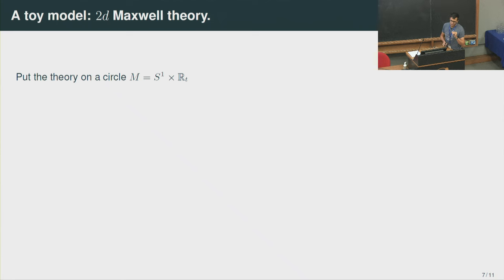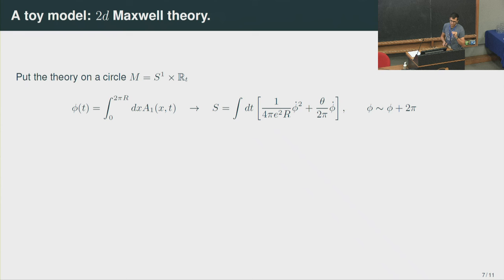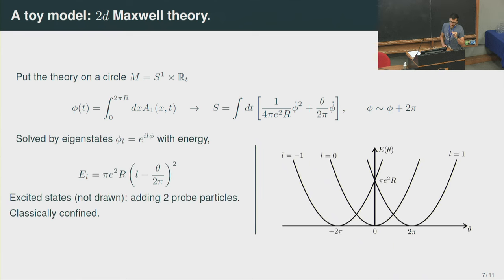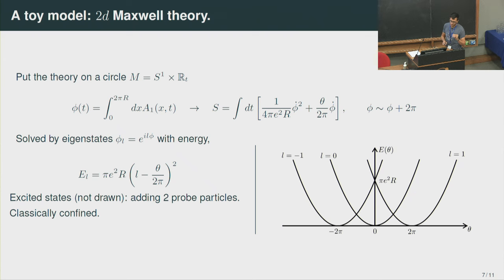Let me discuss the physics of 2D Maxwell theory. We can regulate it by putting it on a circle, where the theory reduces to the quantum mechanics of a particle in a circle with a magnetic field. The spectrum is well known: there are different branches indexed by a quantum number L, and in each branch the energy depends on theta quadratically. On top of these vacua, one can put probe particles. If one puts two electric probe particles, they feel a classically linear attractive force, so electric charges are classically confined in two dimensions.